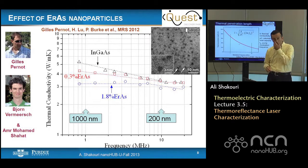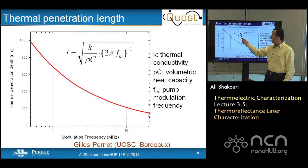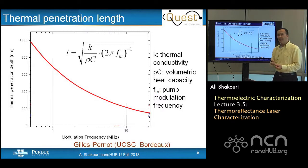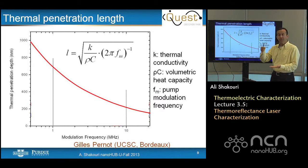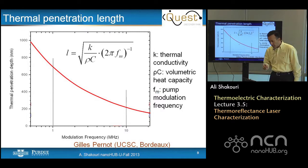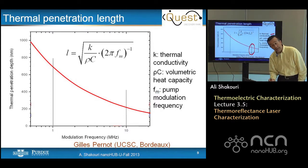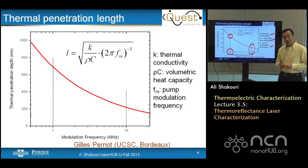This is shown through a simple relation from Fourier law: what is the thermal penetration depth? If I have a source of heat that is oscillating, the temperature profile in the material penetrates depending on the oscillation frequency. Intuitively it makes sense — if it's slow, temperature has time to develop over longer distances; if it's oscillating fast, temperature only develops over a top layer. The equation includes thermoconductivity, volumetric heat capacity, and the modulation frequency. For typical alloys at 10 megahertz this is about 200 nanometers, and at 1 megahertz this is close to 700-1000 nanometers.